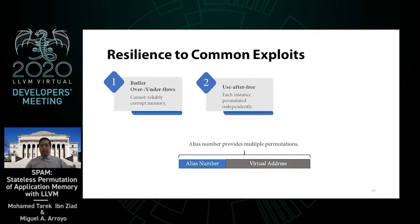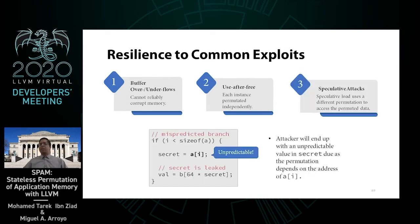Another very common exploitation technique involves leveraging use-after-free. Much like in the buffer overflow case, any pointer that points to the freed memory region would be using an incorrect permutation — the alias number provides multiple permutations in this case. Finally, let's look at speculative execution attacks. This code snippet is a minimal example for Spectre. Normally, the load from A to secret can be reliably accessed with an out-of-bounds index i. However, with SPAM in place, the attacker will end up with an unpredictable value in secret as the permutation depends on the address of A[i], effectively breaking the attack.